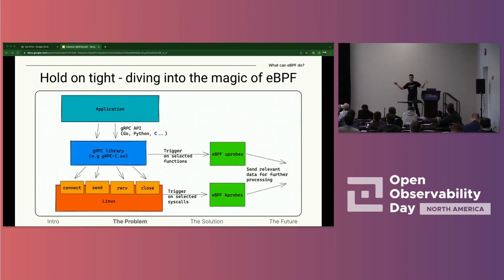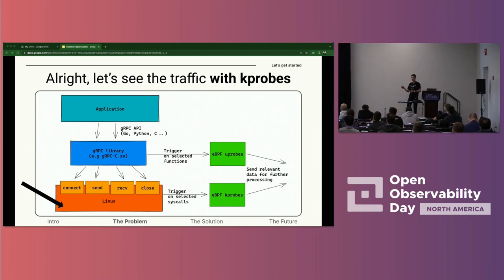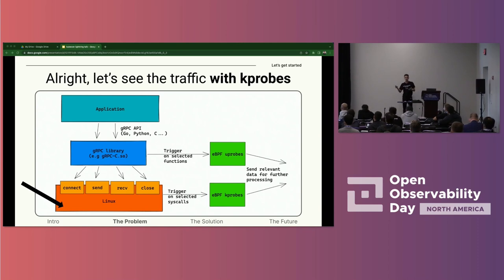eBPF is magic, as I said, that allows us to stop program execution at the beginning and at the end of every function we'd like, inside the kernel space or in the user space, and there we have access to the arguments to these functions. For example, we may attach kernel probes to the send and receive system calls, and there we can see the arguments to these functions, which in this case is just all the data coming in or out of the container. And that is really powerful and looks kind of promising — the headers and the data we seek have to be there.